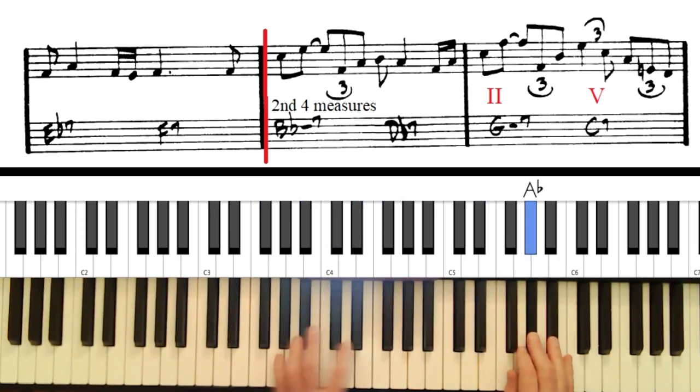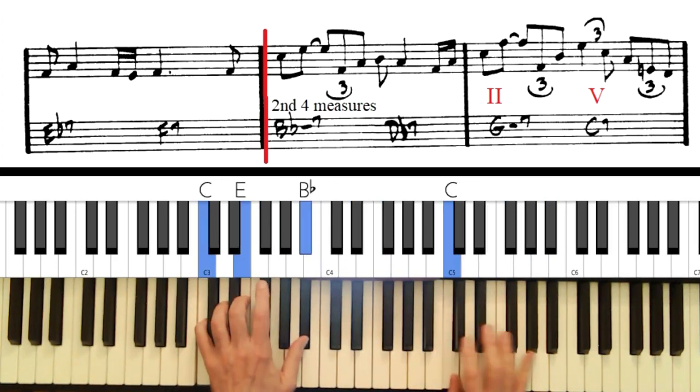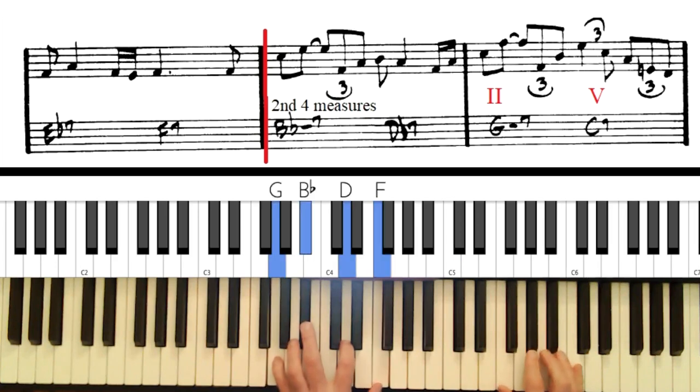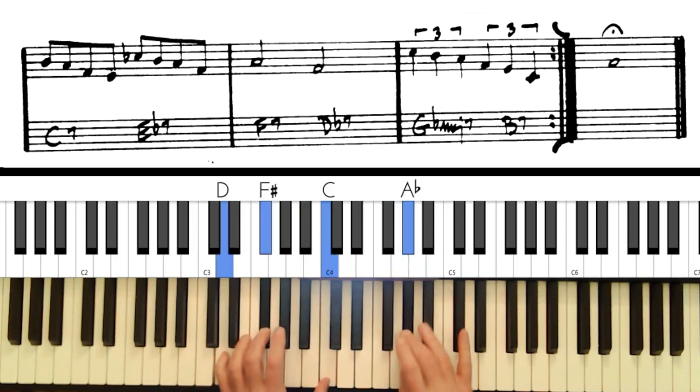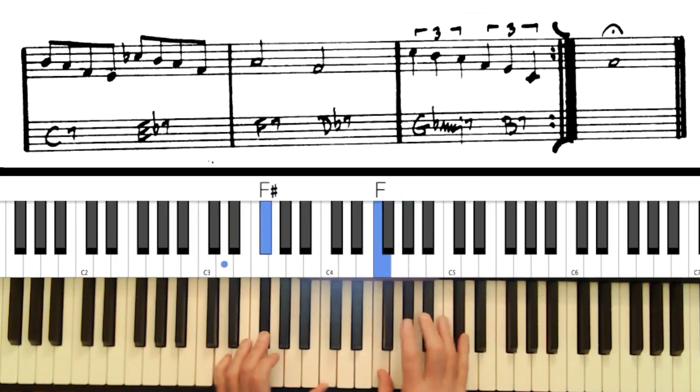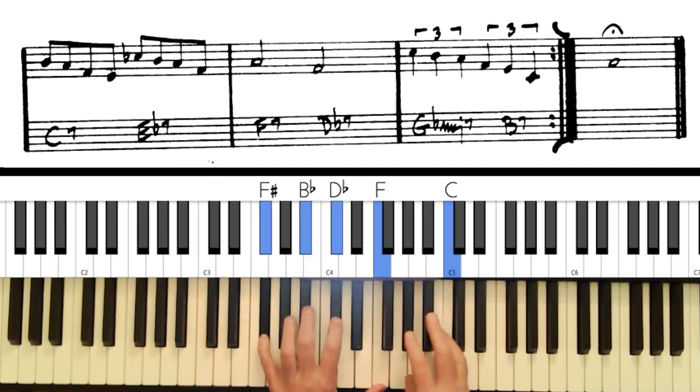Again, the flat 5. Using typical stuff that you'd use on a 2-5-1, such as the Dorian mode. The diminished scale. Getting to that flat 5 again. So I went for the flat 5 on each one of those chords. And I like how it came out.